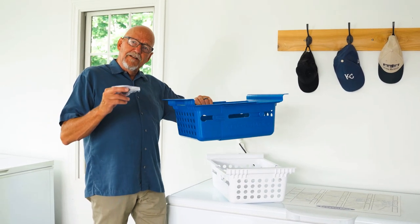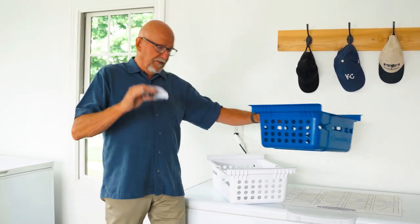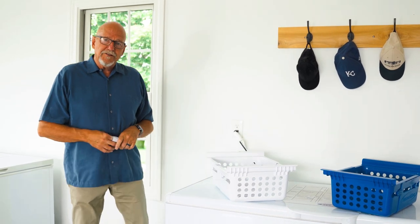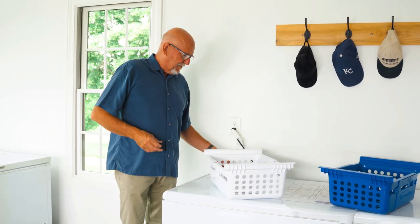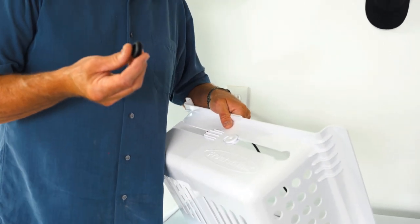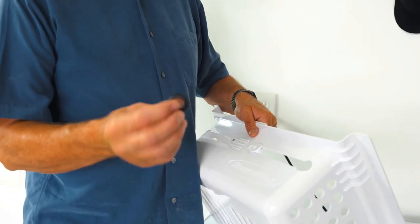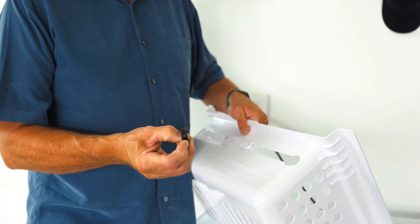The same basket locks will work on either side of the basket. So you don't have to worry that yours will fit one basket or the other because they'll fit both of the baskets. This is what the basket locks look like. They're just a little rubber grommet that has a groove in it.